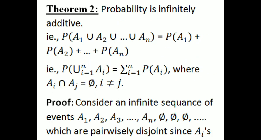Theorem 2: Probability is finitely additive. That is, P(A₁ ∪ A₂ ∪ ... ∪ Aₙ) = P(A₁) + P(A₂) + ... + P(Aₙ), where A₁, A₂, ..., Aₙ are pairwise disjoint events.